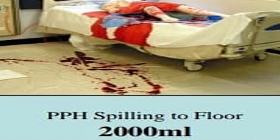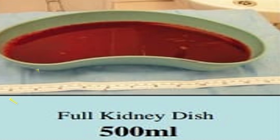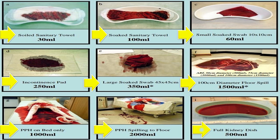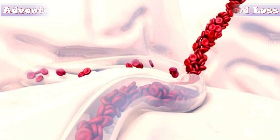A 100 cm diameter floor spill indicates 1500 ml. PPH on bed only indicates 1000 ml of blood loss. PPH spilling on the floor indicates 2000 ml. A full kidney dish shows 500 ml of blood loss. In summary: soiled sanitary towel 30 ml, soaked sanitary towel 100 ml, small soaked swab 60 ml, continuous pad 250 ml, large soaked swab 350 ml, floor spill 1500 ml, PPH on bed 1000 ml, PPH to floor 2000 ml, full kidney dish 500 ml.